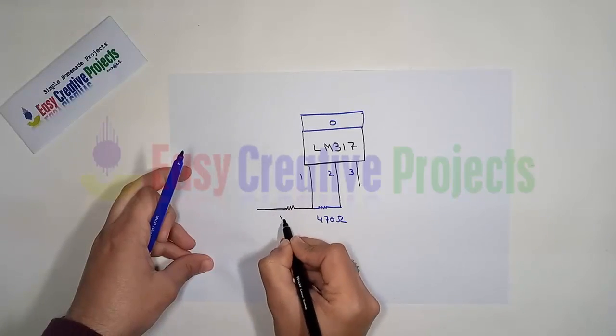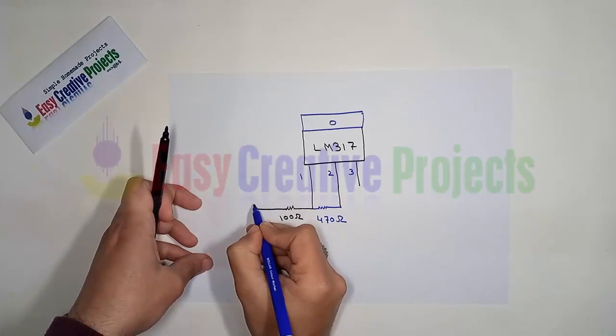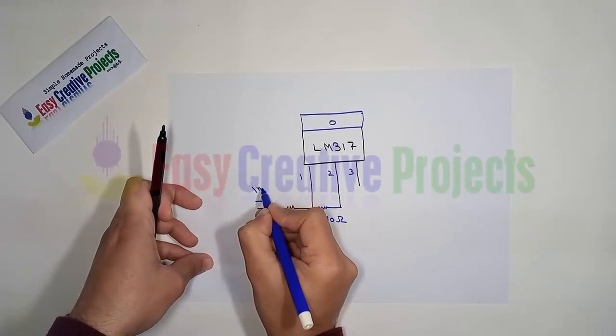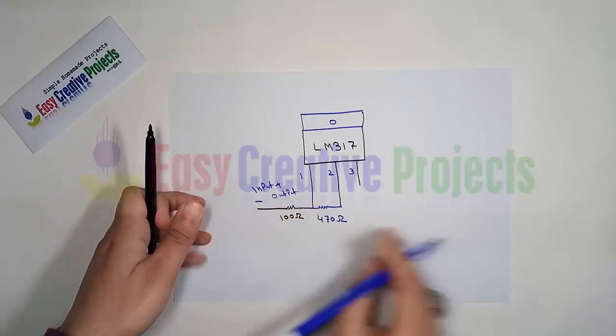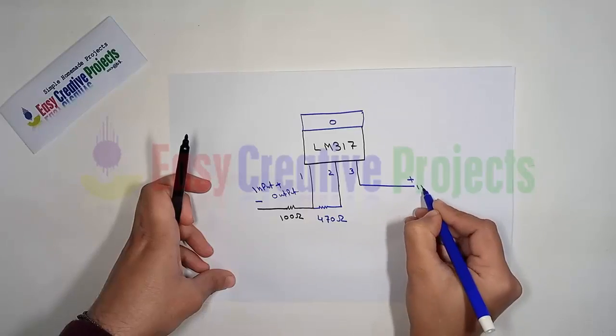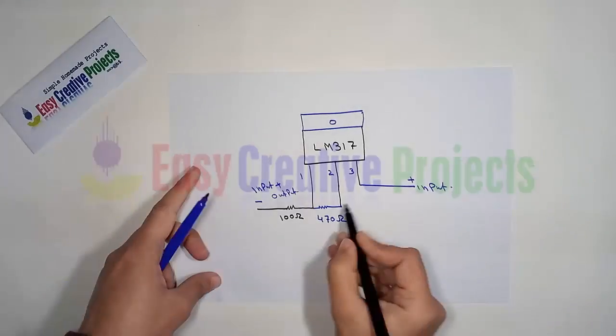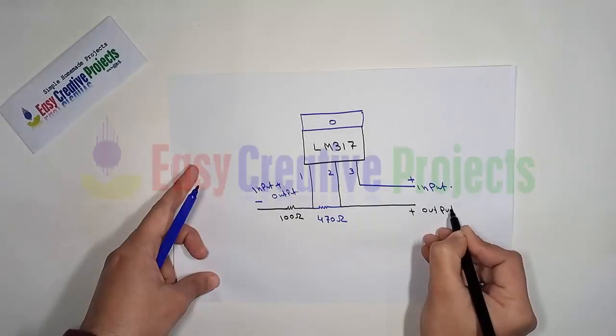Now, one side of the 100 ohm resistor connects with the first pin of the regulator. The second side of this resistor is used for negative input and negative output. The third pin of the regulator is used for positive input, and the second pin of the regulator is used for positive output.